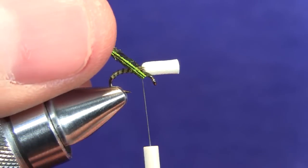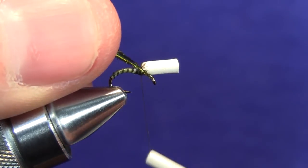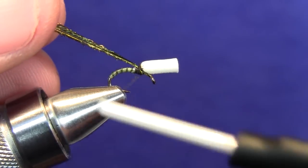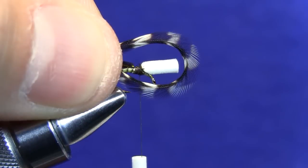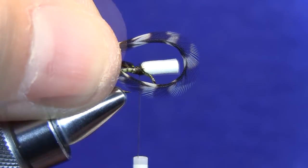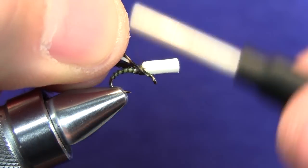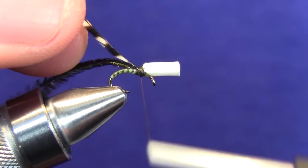At this point we're going to tie in our peacock material, and personally I like to tie them in by the tips. We'll make about five to six wraps just to secure it down, and now we're ready to add our grizzly saddle hackle, and we want that to be about size proportionate to the size of the fly.